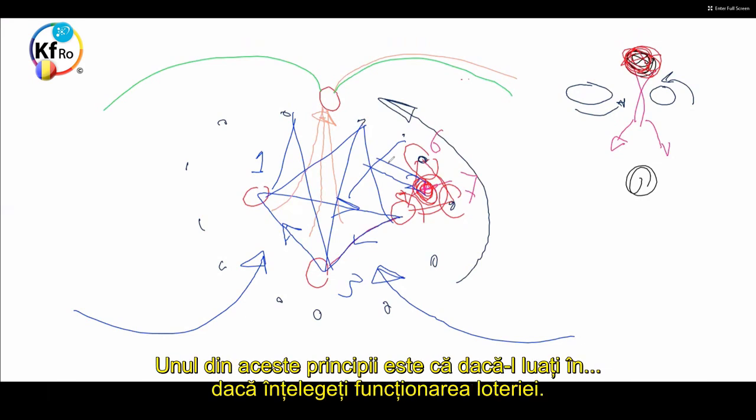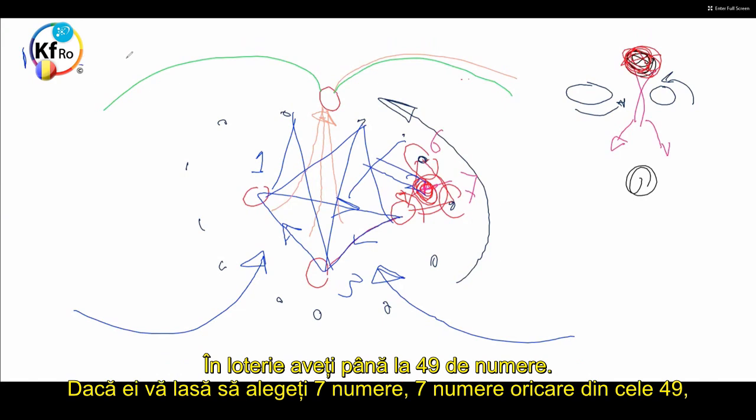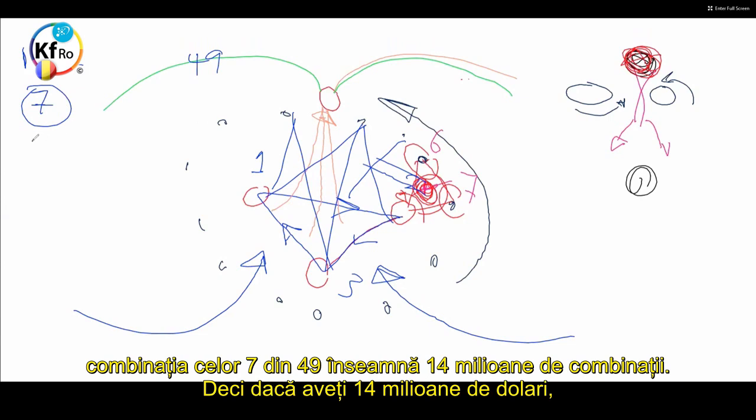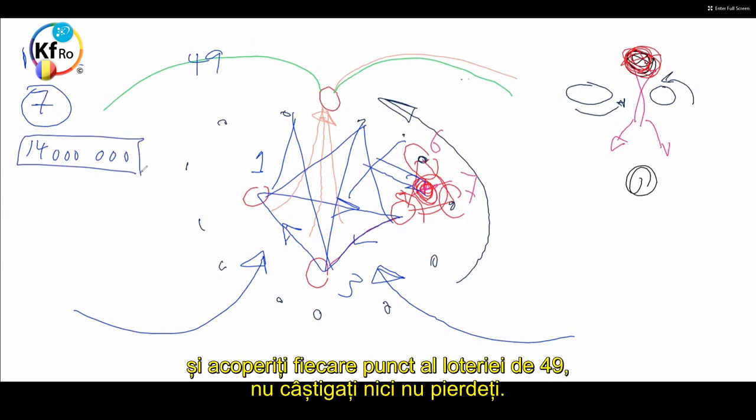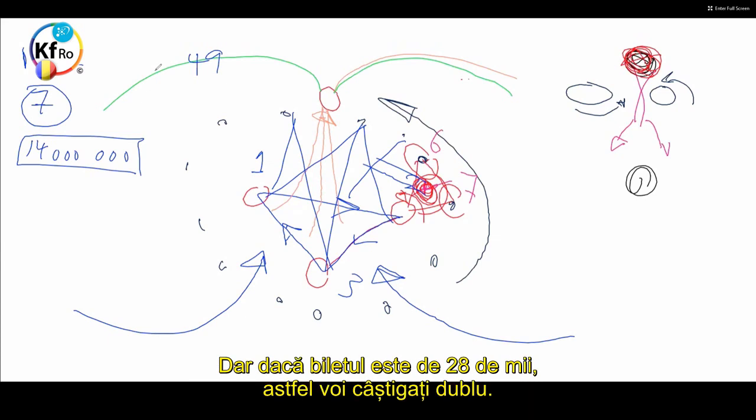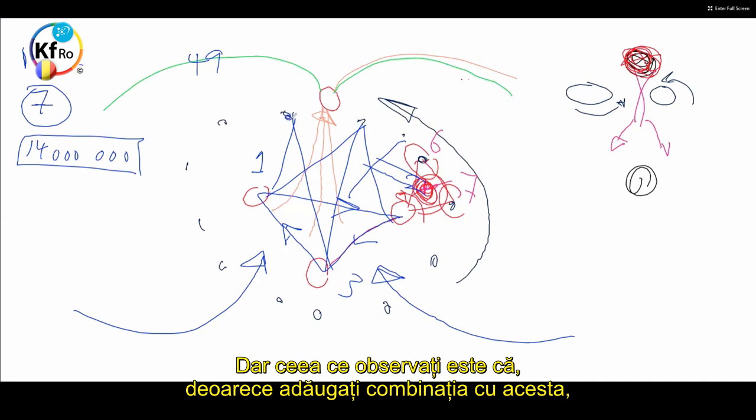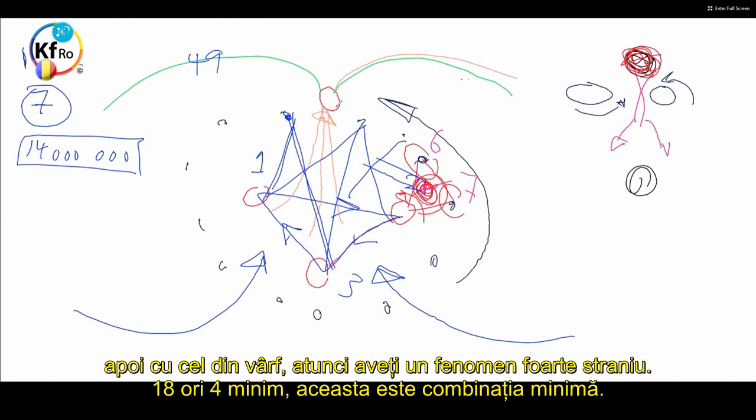One of these principles is that, if you understand the work of lotteries, in lotteries you go, for example, up to 49. If they allow you to choose seven numbers, random seven numbers across this one to 49, the combination of the seven in 49 is 14 million combinations. So if you had 14 million dollars and you cover every single point, and the lotto is at 14, you don't lose, you don't gain. But if your lotto is 28,000, you win double.